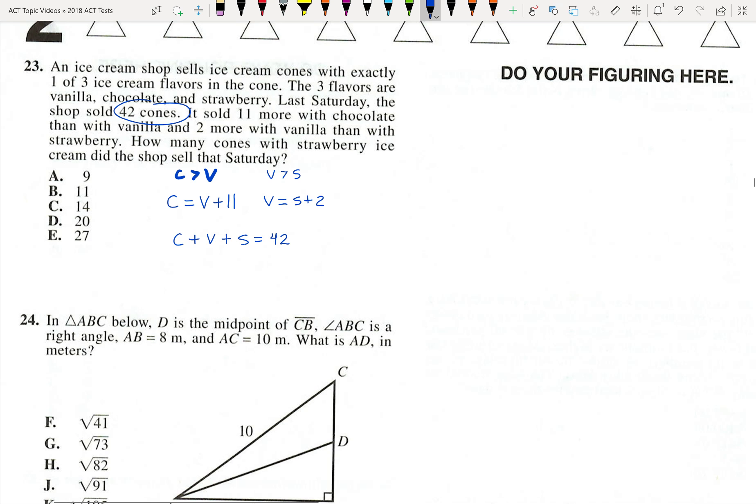So what looks good to me is to get everything in terms of V. So I'm going to plug in V plus 11 for C. So that's going to be V plus 11 plus V. S would be S equals V minus 2. So that would be plus V minus 2 equals 42.